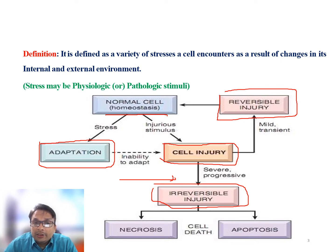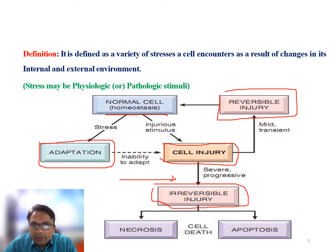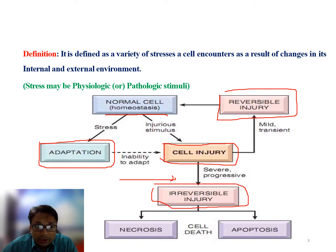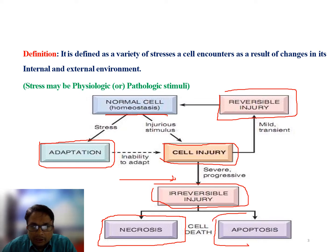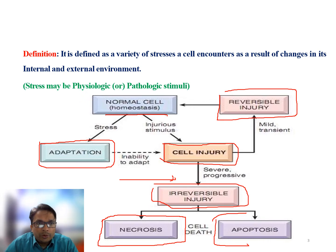Irreversible cell injury ultimately results in cell death. There are two types: necrosis, which is when the cell is killed forcefully, and apoptosis, which is the programmed cell death — a type of irreversible cell injury.